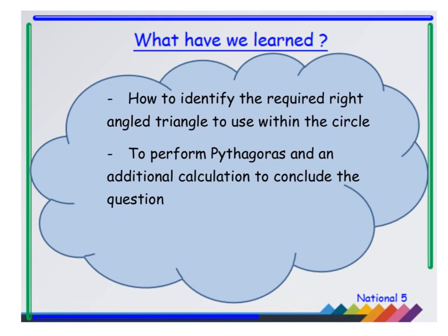So what have we learned? Hopefully you've learned how to identify the required right-angled triangle to use within the circle: centre to chord, centre to the outside, that's my mantra. And we've also maybe learned how to perform Pythagoras and our additional calculation to conclude the question. Remember what I said, it's either adding to the radius, taking off the radius or doubling it. Thanks very much and good luck.